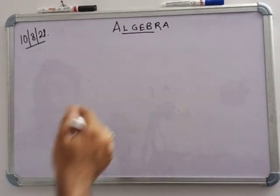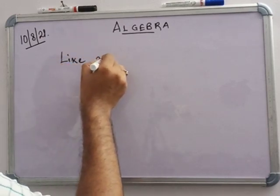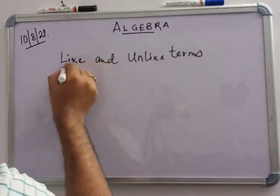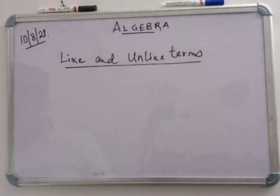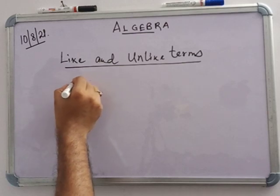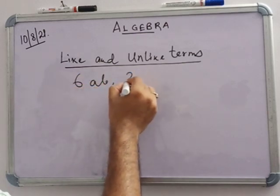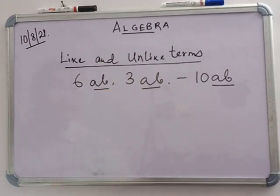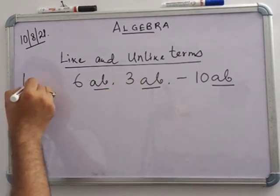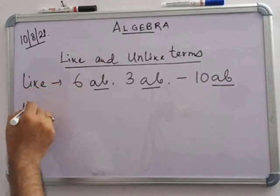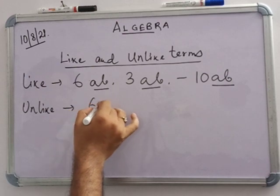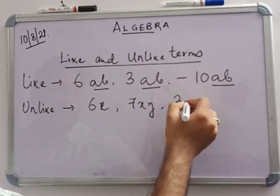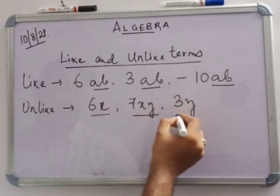Now, like and unlike terms. Like terms means when the coefficients have the same variable part — for example, 6ab, 3ab, minus 10ab — ab is the same, so these are like terms. Unlike terms are when the variables differ — for example, 6x, 7xy, 3y — these are unlike terms.